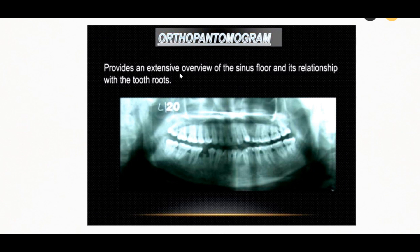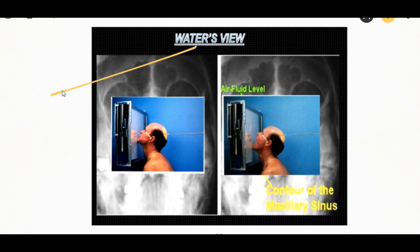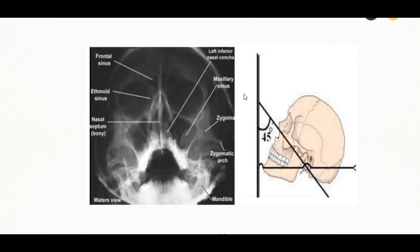On panoramic radiography, it provides an extensive overview of the sinus floor and its relation with the teeth and roots. The Waters view is used to look at the contour of the maxillary sinus. The Waters view is also known as the occipitomeatal view and can be used to visualize a number of structures in the skull, such as the maxillary sinus, ethmoidal sinus, frontal sinus, and sphenoid sinus.